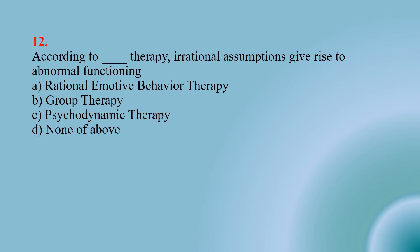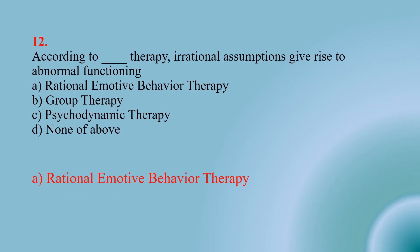Number twelve: According to this therapy, irrational assumptions give rise to abnormal functioning — Option A: rational emotive behavior therapy; Option B: group therapy; Option C: psychodynamic therapy; Option D: none of above. The right option is A — rational emotive behavior therapy.